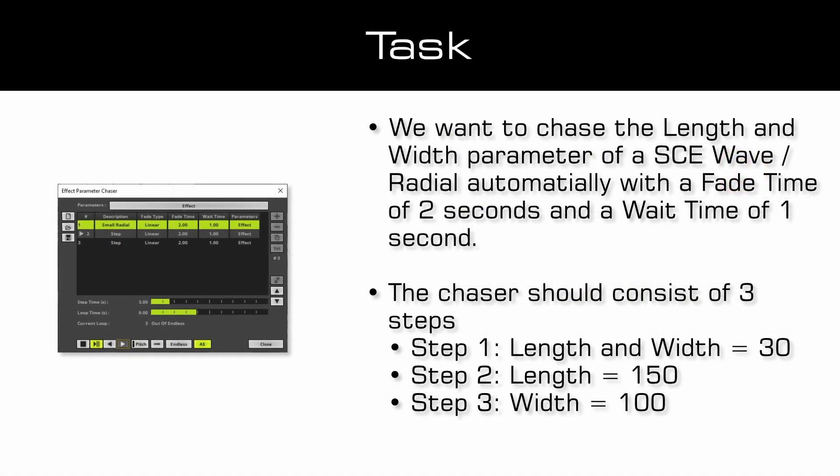As a task, we want to chase the length and wide parameter of a SCE wave radial automatically. This parameter chaser should consist of three steps. In step 1 the length and wide should be set to the value 30. In step 2 the length should be set to 150, and in step 3 the wide should be set to 100.